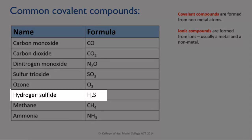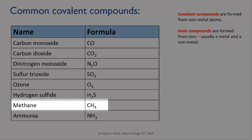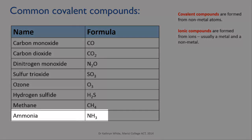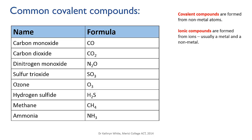Hydrogen sulfide is rotten egg gas. Methane is the primary component of what we call natural gas, and it's also produced by bacteria and in farts. Detecting methane is one of the tasks of the Curiosity Rover that NASA sent to Mars — it's up there now — since it's thought that this will give us a clue as to whether there is or was any form of life on Mars. And ammonia is often dissolved in water and used as a cleaning product; it has a very distinctive pungent sharp smell, and most of the world's production of ammonia is used to produce the fertilizer ammonium nitrate.